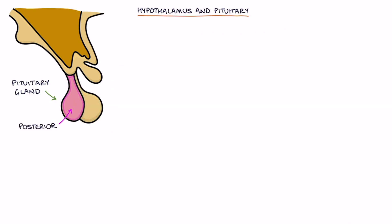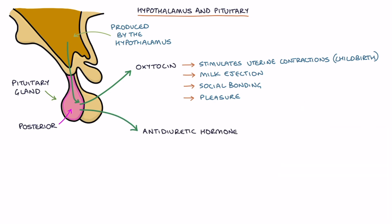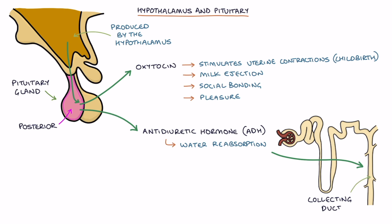The posterior pituitary releases oxytocin which is actually produced by the hypothalamus but secreted by the posterior pituitary and also plays a role in social bonding and pleasure and anti-diuretic hormone or ADH which is again produced in the hypothalamus but secreted by the posterior pituitary. Anti-diuretic hormone stimulates water reabsorption from the urine in the collecting ducts of the kidneys making it responsible for concentrating the urine.